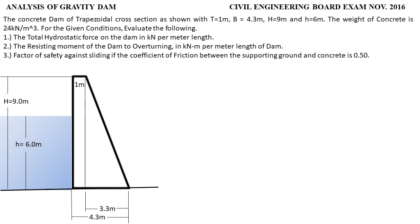The concrete dam of trapezoidal cross-section as shown: the top T is equal to 1 meter, B is equal to 4.3 meters, capital H is equal to 9 meters, and small h is equal to 6 meters. The weight of concrete is equal to 24 kilonewton per cubic meter. For the given conditions, evaluate the following.